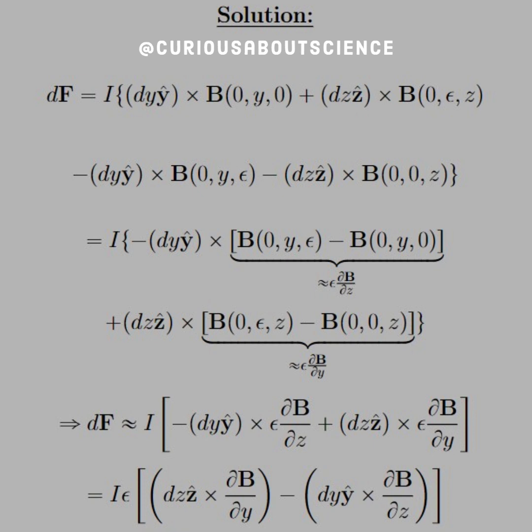Here, once we simplify down, we can see here that after we factor out the ŷ components, we're left with cross B(0,y,ε) minus B(0,y,0), which is just equal to the approximation ε∂B/∂z. And similarly for the ẑ hat, we add the other part of the expansion ε∂B/∂y.